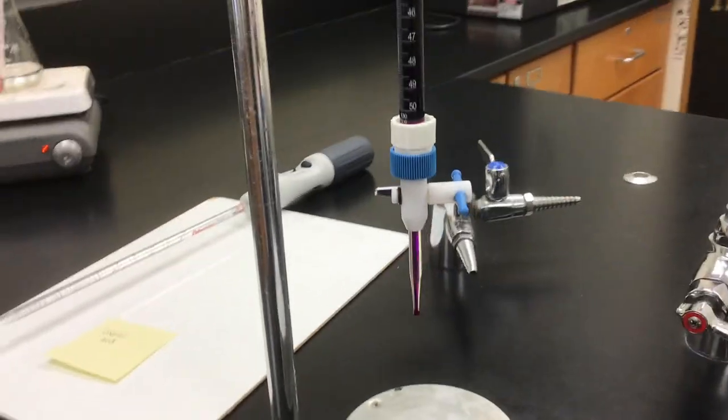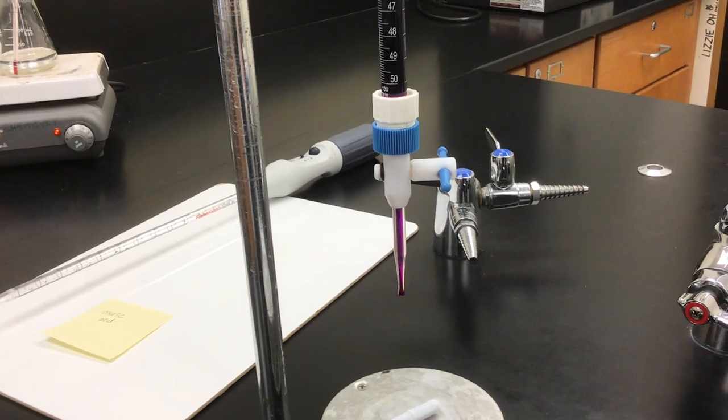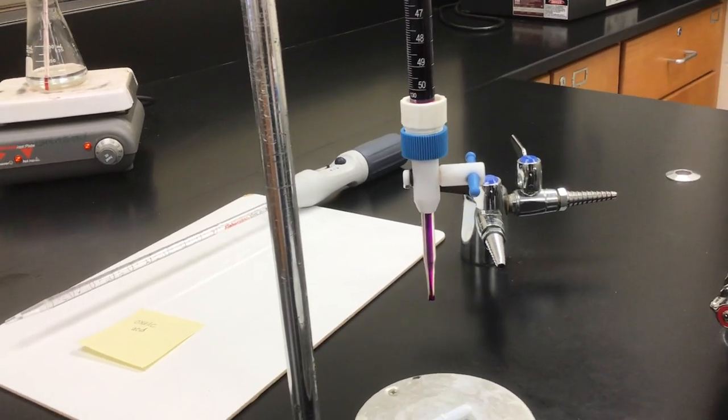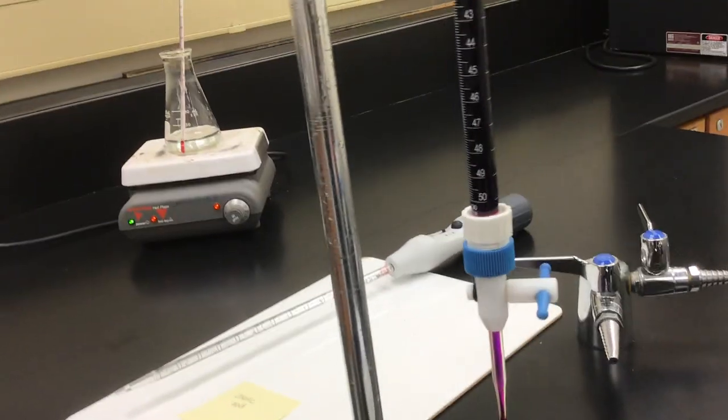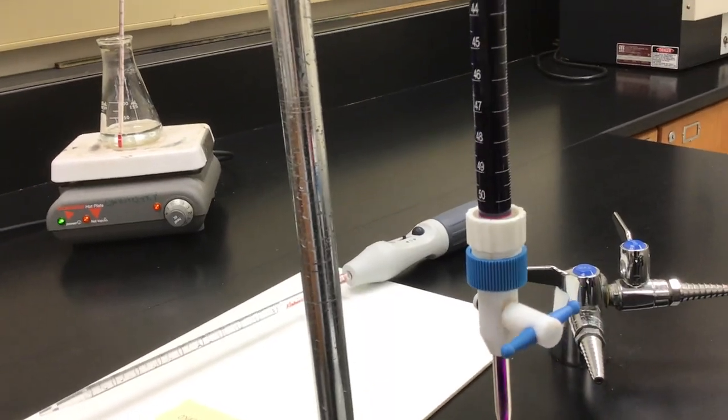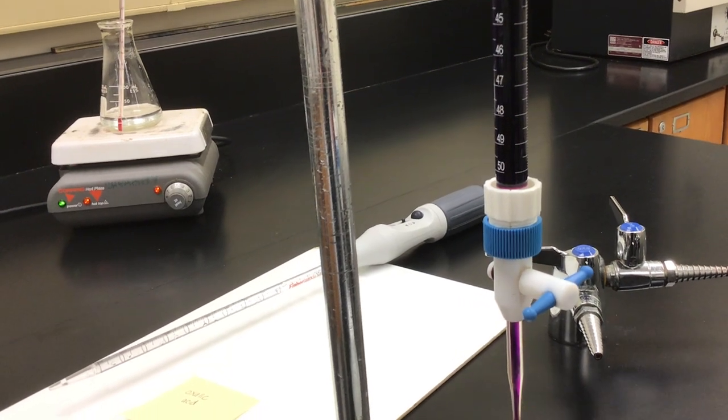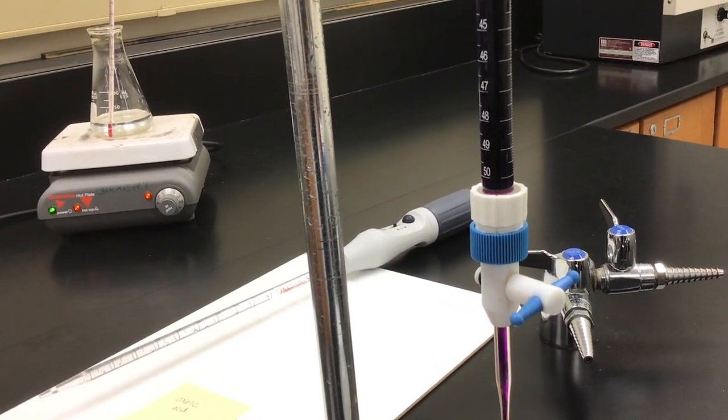Just some reminders that you want when you're titrating. When you're pouring your solution in, you want the stopcock, the valve at the bottom, to be perpendicular to the burette itself. That's when it's closed, so that way the potassium permanganate solution won't drip out of the bottom until you're ready.